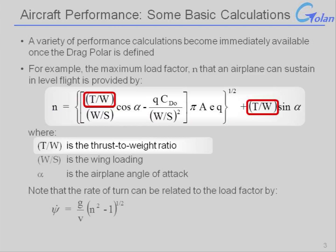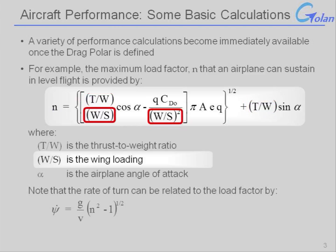We also see that there is an inverse relationship to the wing loading, so lower wing loading leads to better sustained maximum load factor. Also in this relationship, we can see some of our familiar friends from the drag polar — for example, the zero-lift drag coefficient makes an appearance.